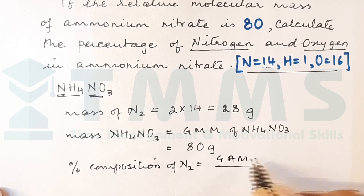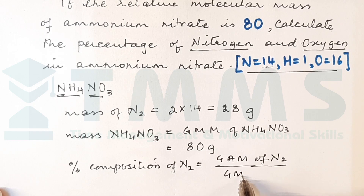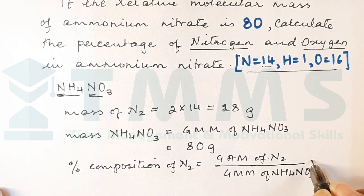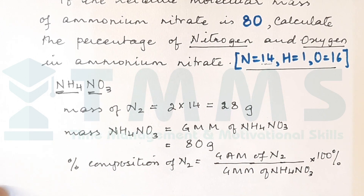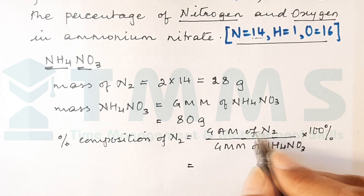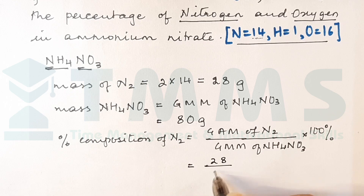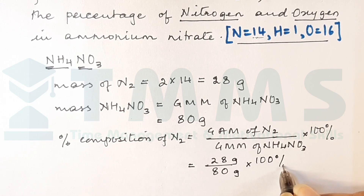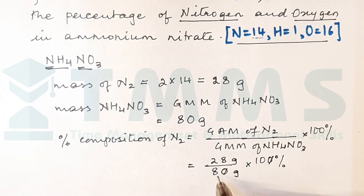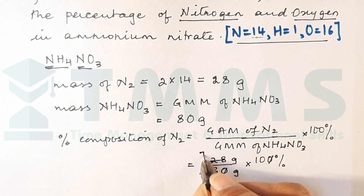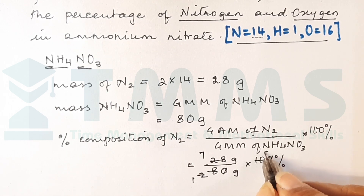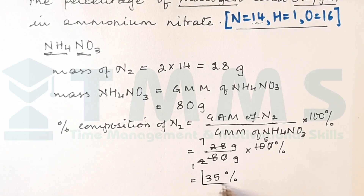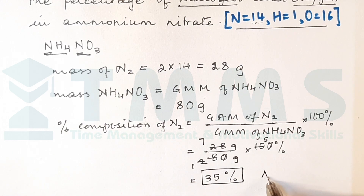Percentage composition of nitrogen = GAM of nitrogen ÷ GMM of NH4NO3 × 100%. That is 28 g ÷ 80 g × 100. After cancellation: 4 goes twice, 4 goes 7 times; 2 goes once, 2 goes 5 times; so we get 7 × 5 = 35 percent. Therefore 35% of ammonium nitrate is nitrogen.